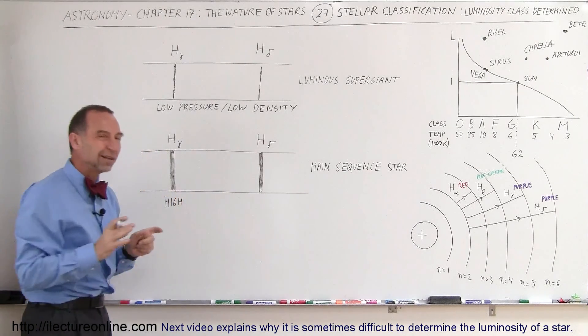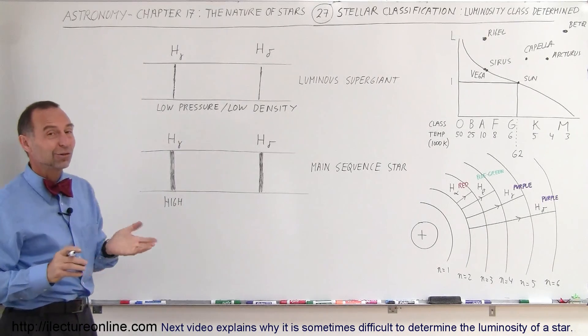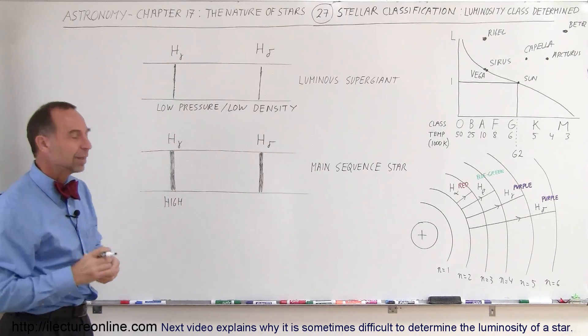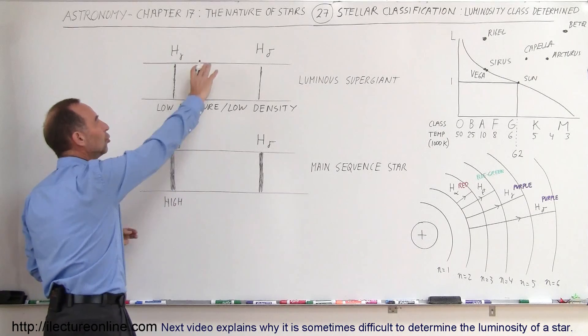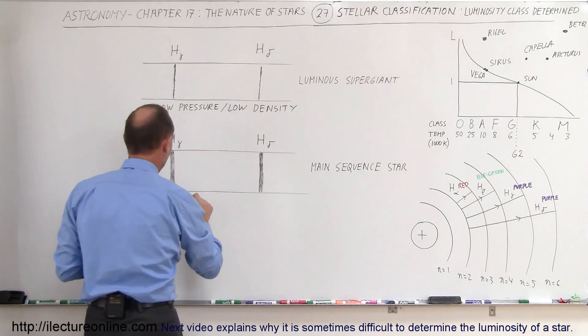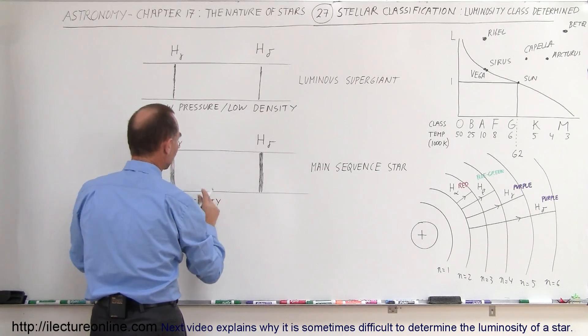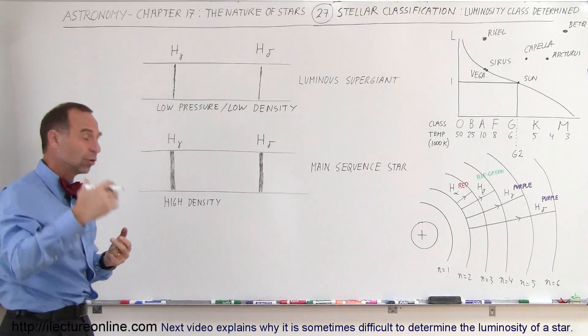Of course, that is relative because at the photosphere of even main sequence stars, the gases are not very dense compared to what we're used to with atmospheric pressure here. But in comparison to the giant stars, the density and the pressure is much higher. So we have high density and high pressure, relatively speaking, at the surface of the stars on the main sequence relative to subgiants, giants, or supergiants.